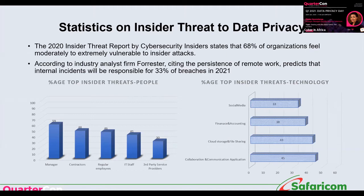According to Forrester, citing the persistence of remote working, internal incidents will be responsible for 33% of breaches in 2021. This comes close to ransomware and malware, which have been the top cybersecurity incidents.